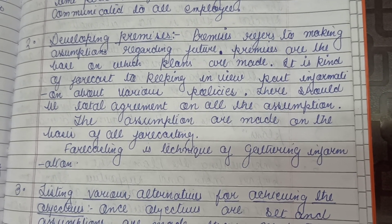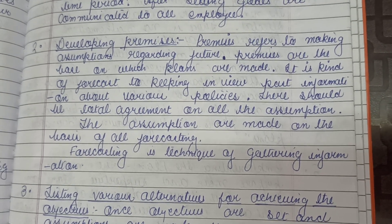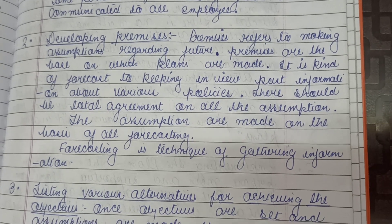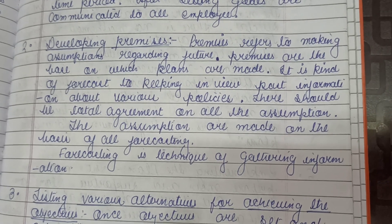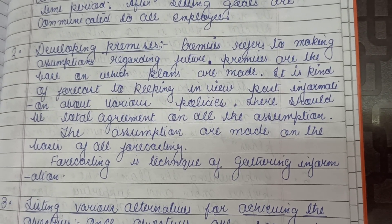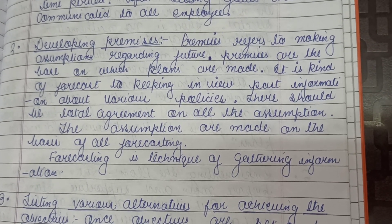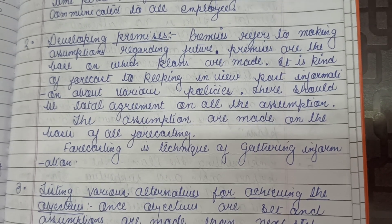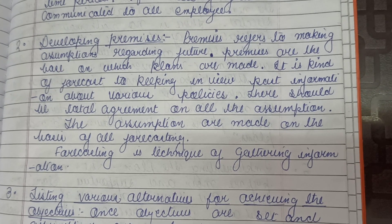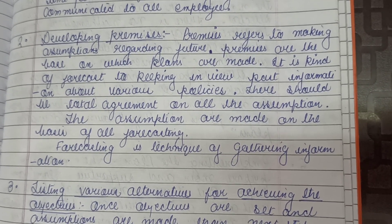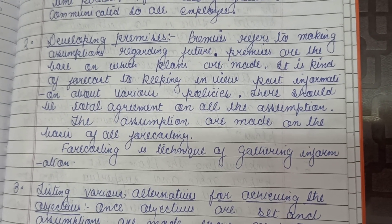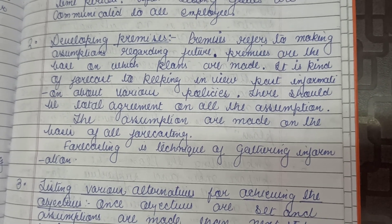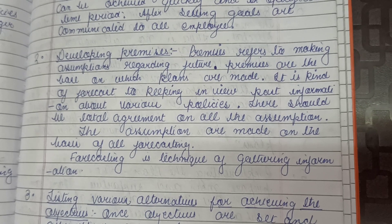Premises are the base on which plans are made. It is a kind of forecast, keeping in view past information about various policies. There should be total agreement on all the assumptions. Assumption means forecast. Assumptions are made on the basis of all forecasting — for example, future sale is 1 crore or 10% profit. These assumptions are made on the basis of all forecasting.